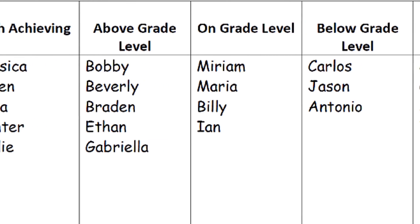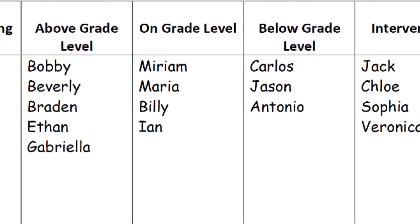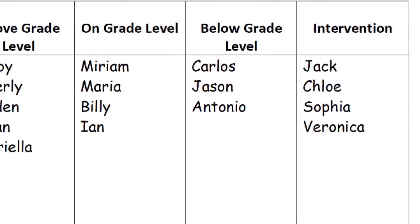I make groups of students based on the data I have for the beginning of the year. Based on this data, I would have five groups: high achieving, above grade level, on grade level, below grade level, and intervention. I would never show these levels to students. Instead, I might color code the groups or name them. I could divide further by specific skills that students need. Next, I would need to decide how many small group times I have during the week and then determine which groups I will meet with each day.